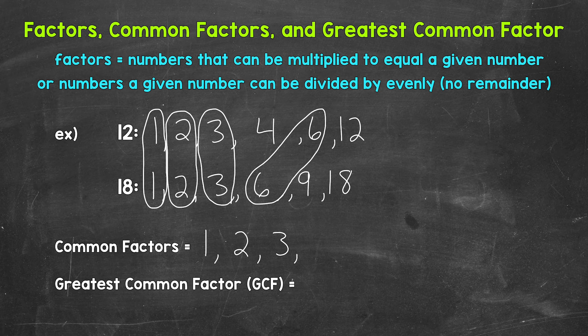Now we have the greatest common factor, or GCF. That's just the greatest factor in value that they share or have in common. The greatest common factor between 12 and 18 is 6. So the greatest common factor equals 6.